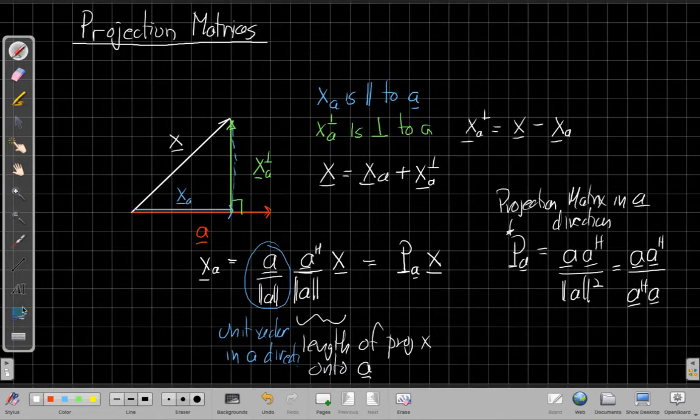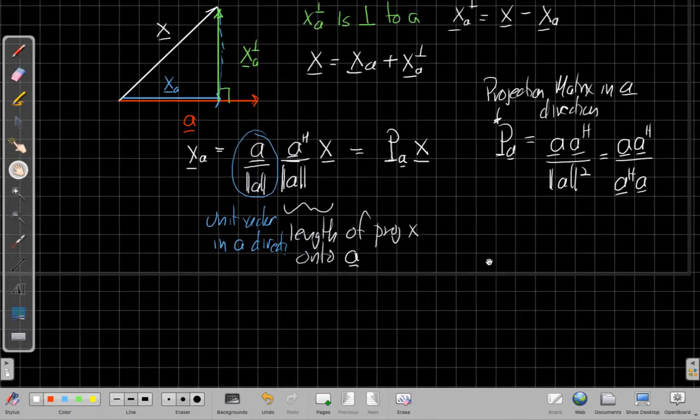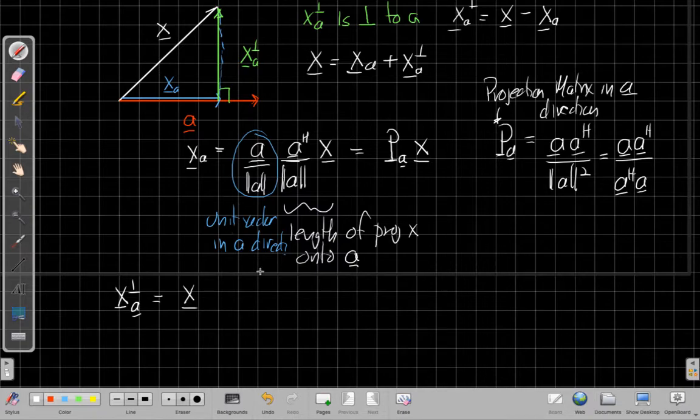And so then we say, well, how do I find the orthogonal component? Well, we can start from what I had here a second ago, this subtraction. I can say, well, if I want to find x sub a complement, we said, well, first of all, I could use the projection matrix just to find x of a and then subtract it off.